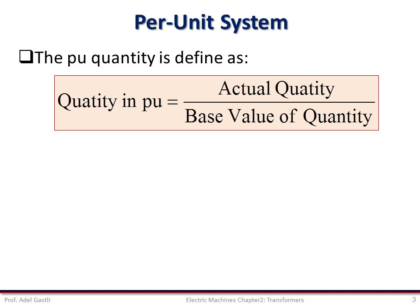Any quantity in per unit is defined as the ratio of its actual value over its base value. So to establish a per unit system, it is necessary to select power and voltage base values as follows.